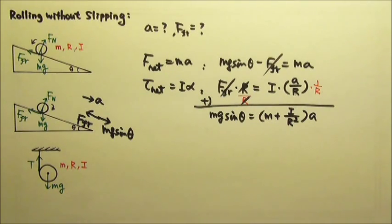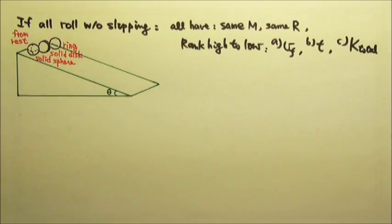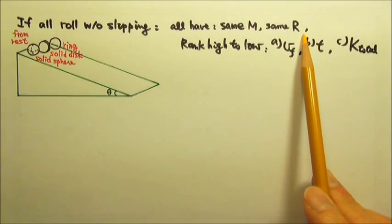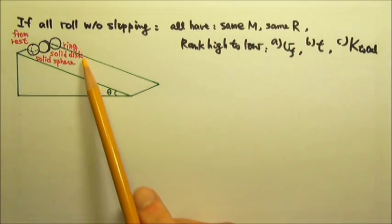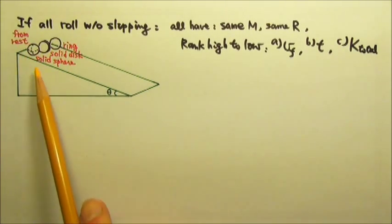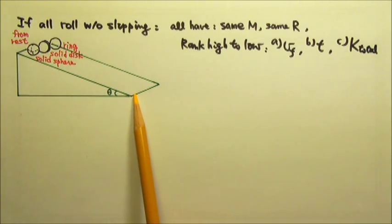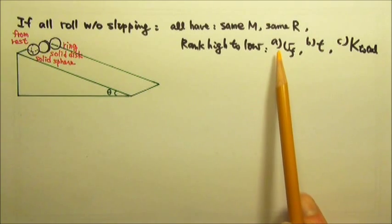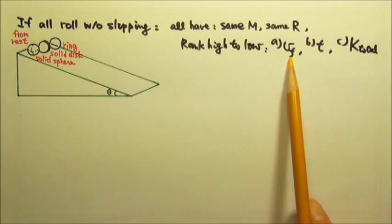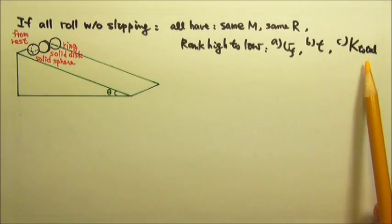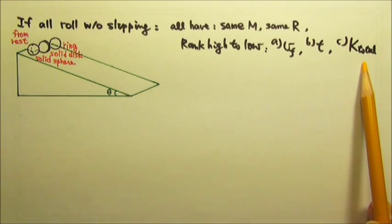Now let's say we have three objects — all uniform, all with the same mass and the same radius: a ring, a solid disk, and a solid sphere. They all start from rest and roll without slipping down an incline. Rank from high to low: A, the speed at the bottom; B, the time it takes to go down; and C, the total kinetic energy at the bottom of the incline.